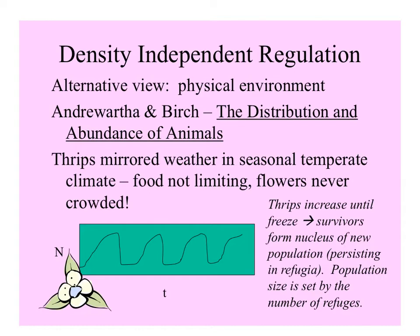The book 'The Distribution and Abundance of Animals' by Andrewartha and Birch championed density-independent regulation. Certain groups of insects especially have numbers that correspond very well with weather patterns. For example, thrips in flowers increase in number until there's a freeze, but a few thrips survive somewhere, and as conditions warm up the population increases again. Where they persist through bad weather is called a refuge, so population size is set by the number of refugia as well as the limits of the environment, including weather extremes.